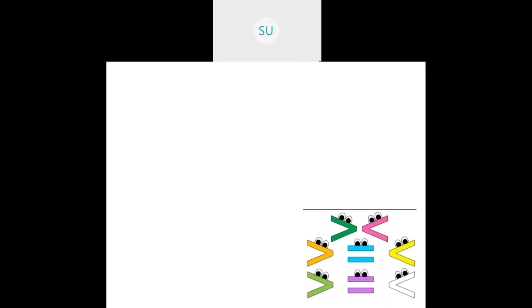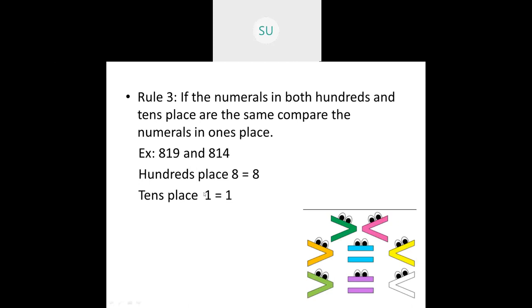Now the last rule: sometimes both the hundreds and tens digits will be the same. Then you move on to the ones place. Here in 819 and 814, hundreds place is 8 equal to 8, tens place 1 is equal to 1. Then in ones place, 9 is greater than 4. So 819 will be greater than 814.